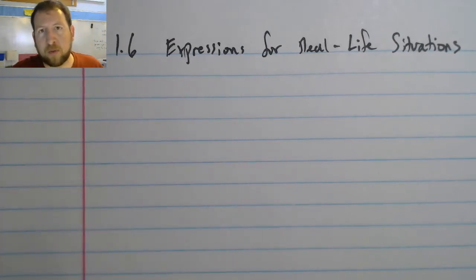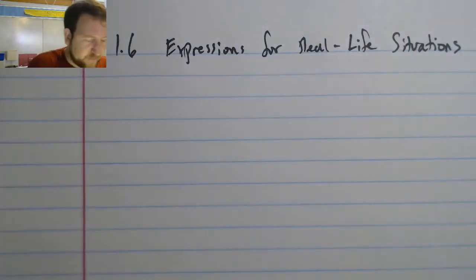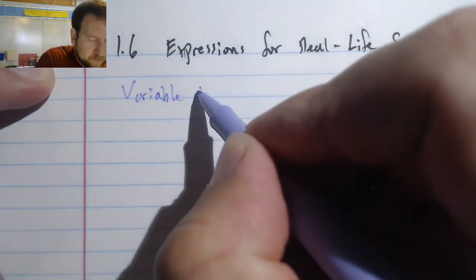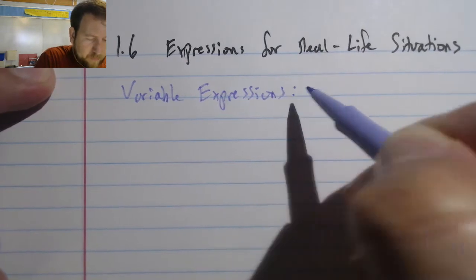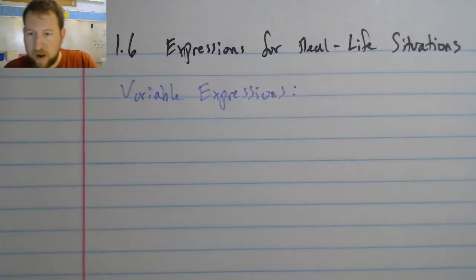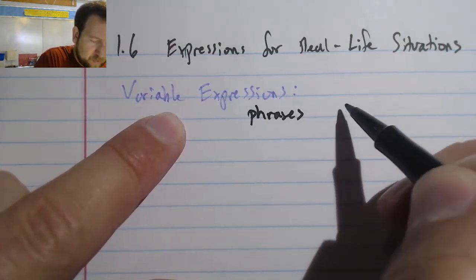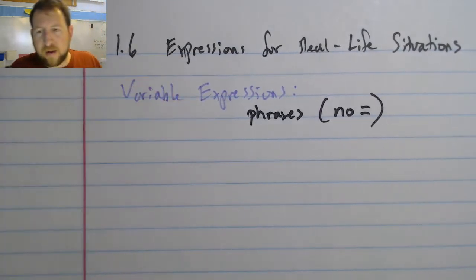We're going to remember what expressions are, and then we're going to talk about why expressions are important, and then we're going to do some building of expressions. So remember we've been talking about variable expressions, and recall that those are phrases, which means there's no equals, and it means that they contain numbers, operations, and variables.